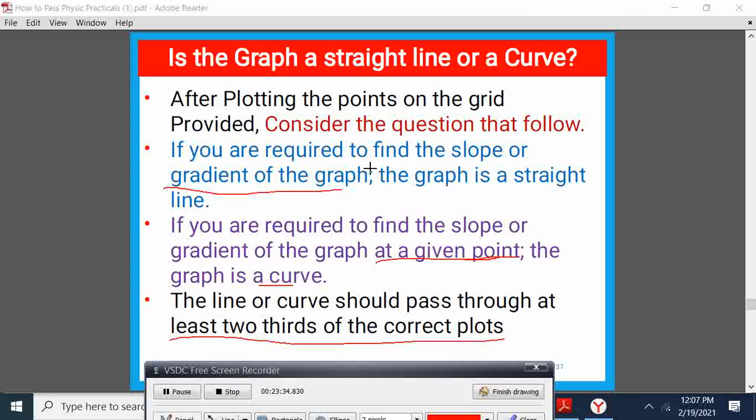If now you are drawing a line or a curve, it should pass through at least two-thirds of the correct plots. I repeat here, consider the equation that you follow, that if you are finding the slope of the graph, then that is a straight line. But if you are going to find a slope at a given point, that is a curve.